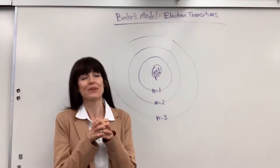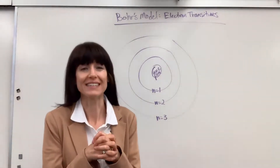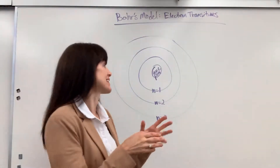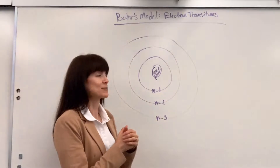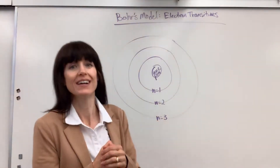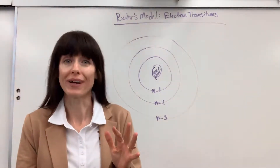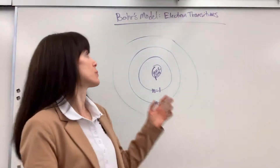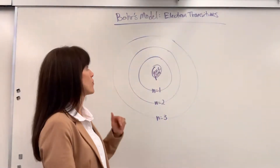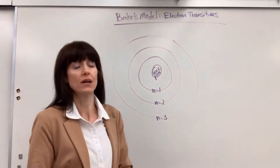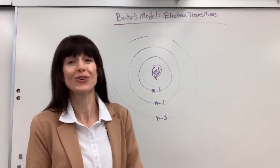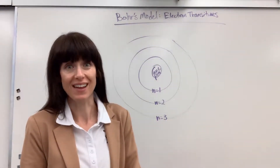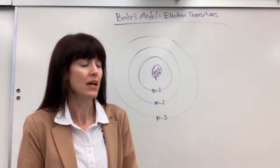Hi, this is one of my favorite things. I love light, and it's actually this explanation right here that brings joy to my heart. This is Bohr's model for electron transitions — it's the electron moving inside of the atom.